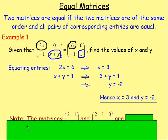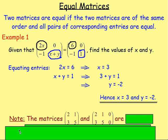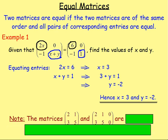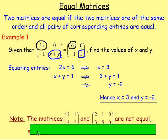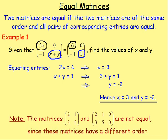Let's take that stage further. What about these two matrices: 2, 1, 3, 5 and 2, 1, 0, 3, 5, 0 — would they be equal? No, they're not equal, because the order is different. This one has 2 rows and 2 columns. This one has 2 rows and 3 columns. That means they're not equal — there is a different order.